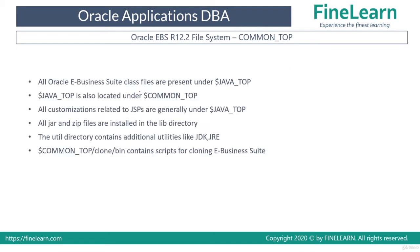Common Top contains the Java class files related to all the products under Java Top, which is nothing but a java directory under Common Top. If the customer is customizing HTML pages or JSP pages, they usually keep their custom directories under Java Top as well. All the jar files and zip files are installed in the lib directory under Common Top.